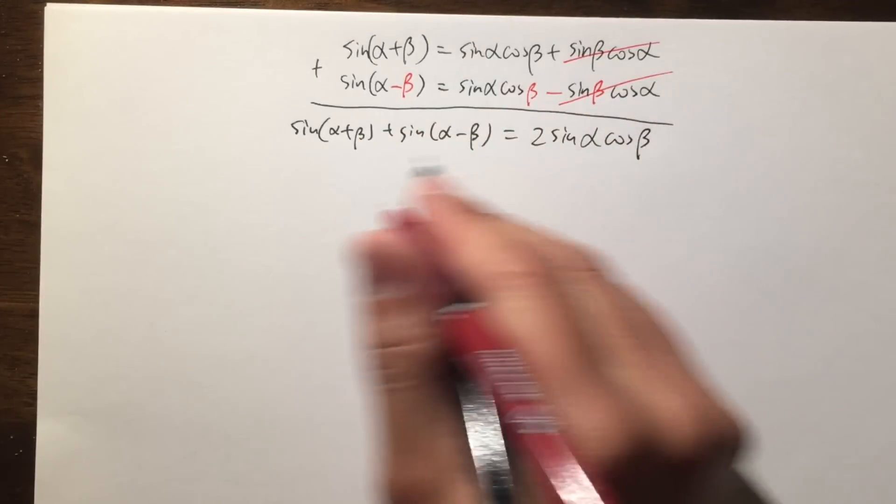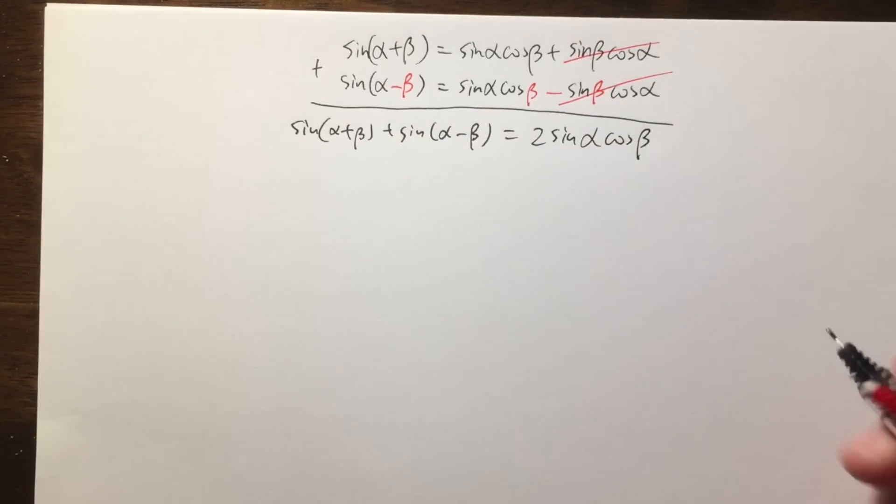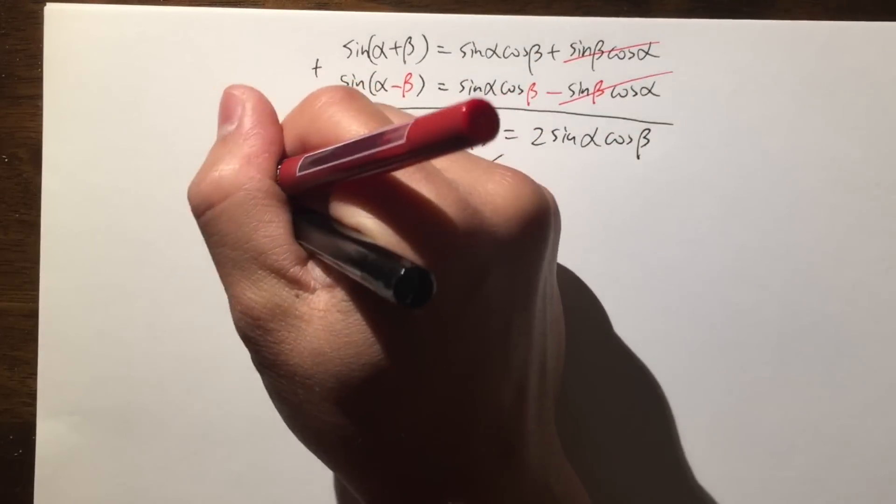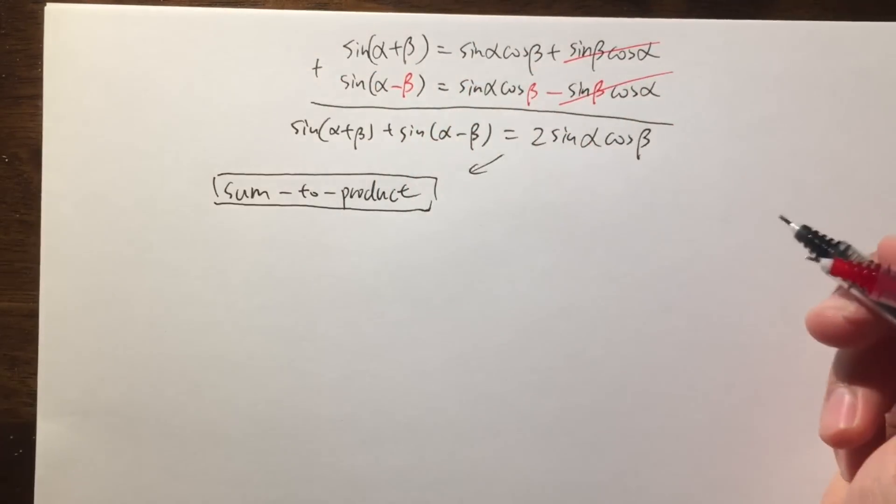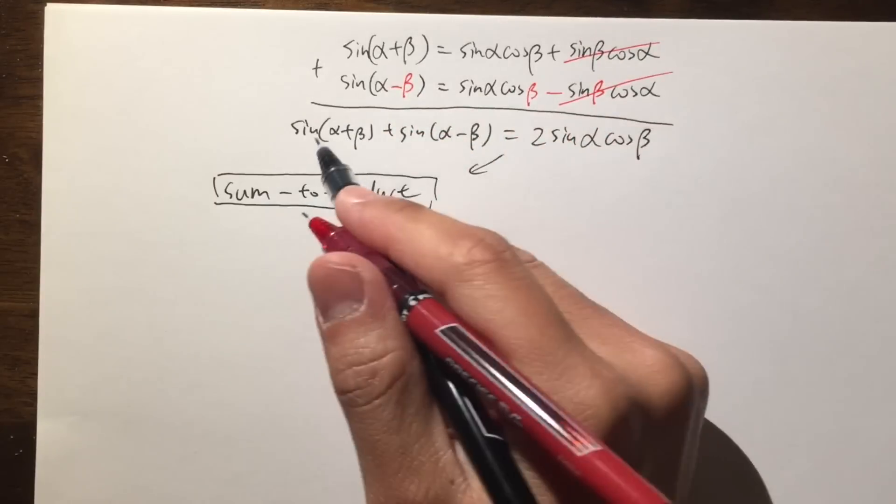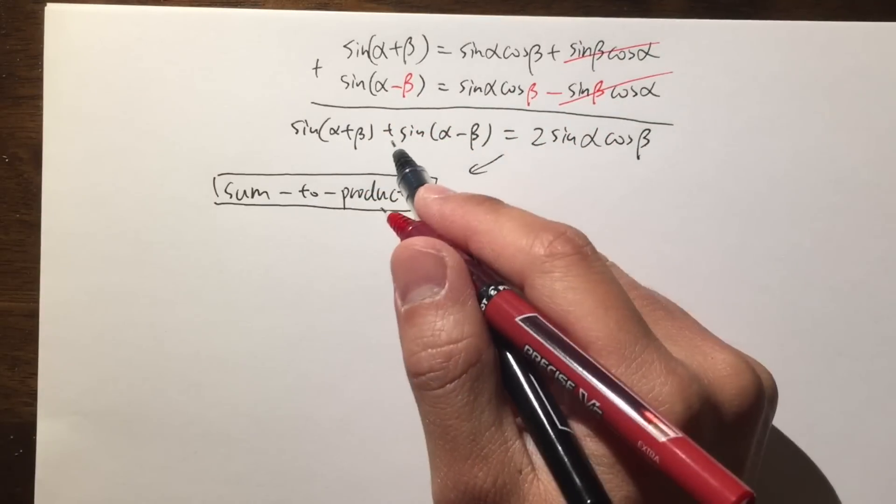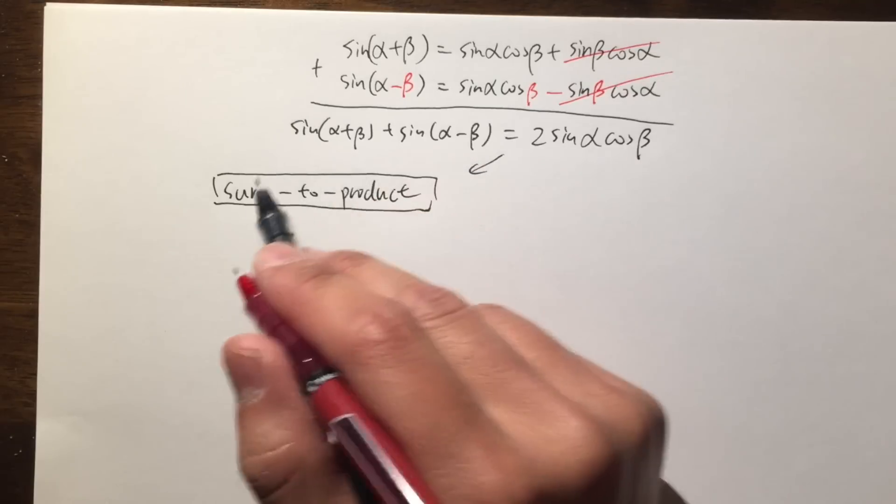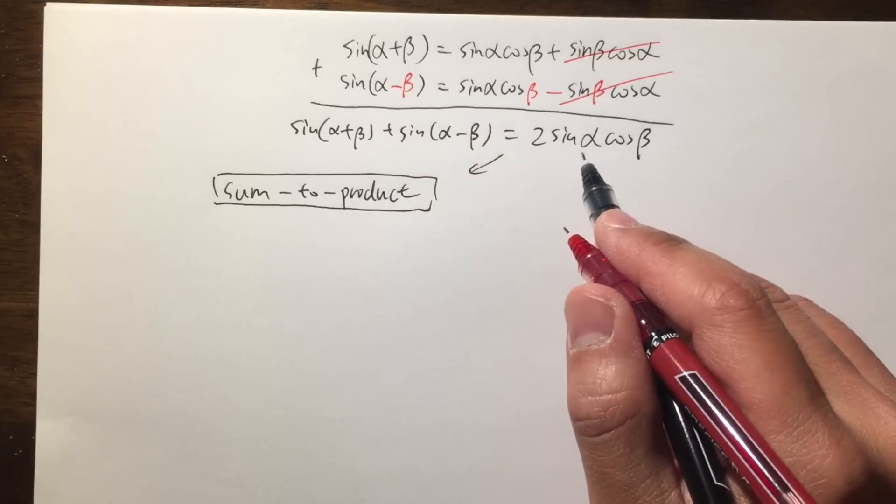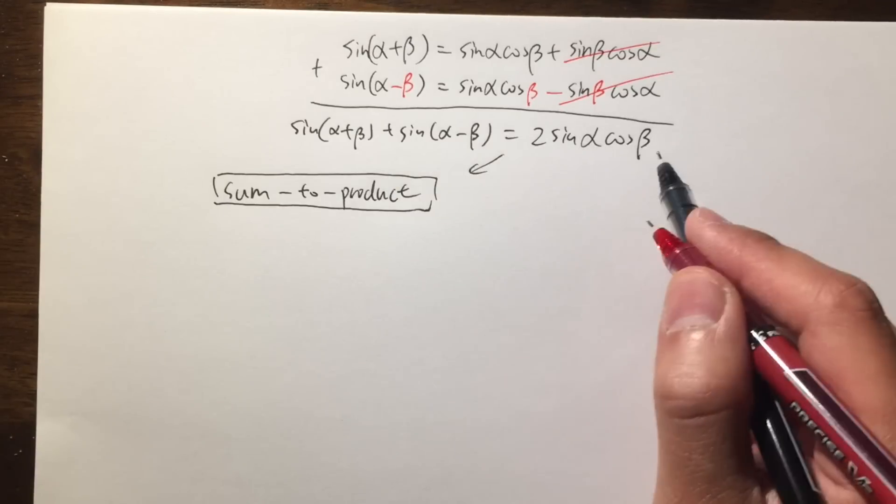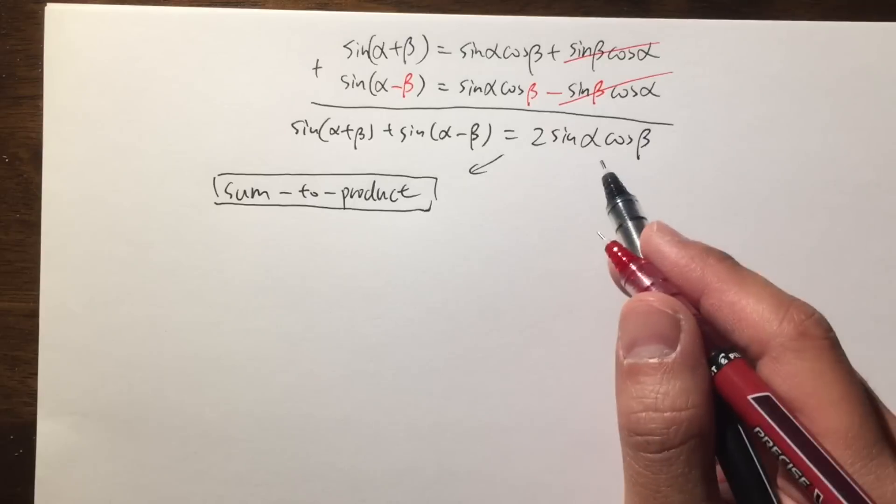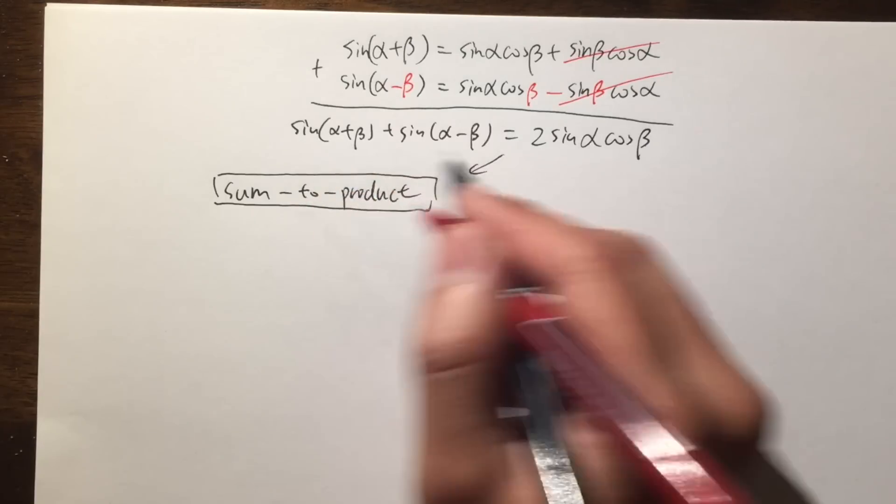And we'll be focusing on this equation right here. First of all, let me show you guys how we can come up with the sum to product identity. Because we can see that on the left-hand side, we have sine and sine, and we're adding them up. But the inputs are different, right? So this is why we call it the sum. And then on the right-hand side, we have a product of sine and cosine. So you'll see, this is the sum to product identity.